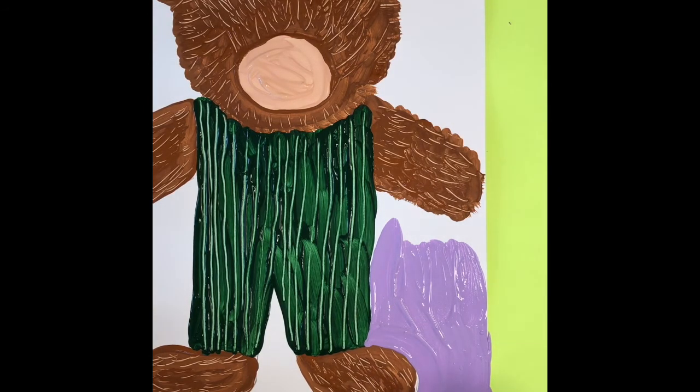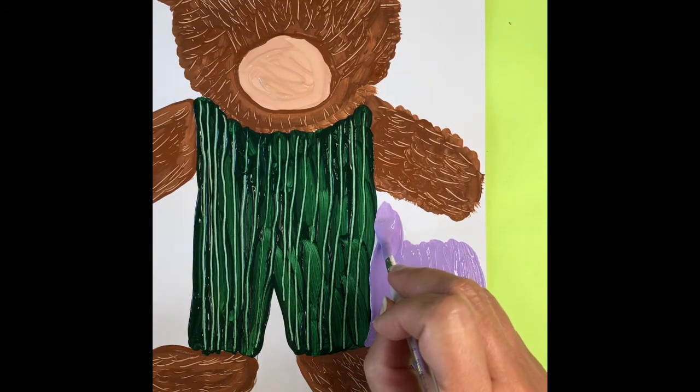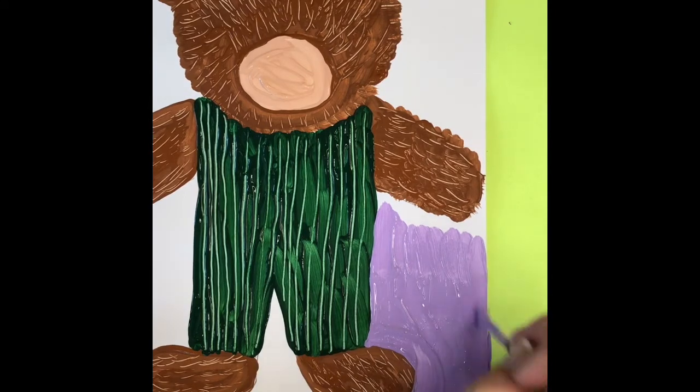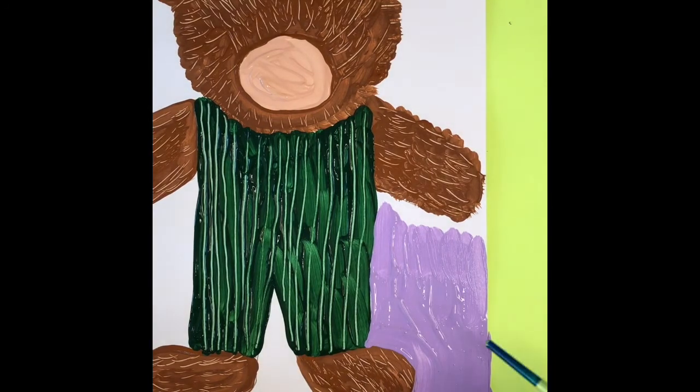And once I get a section painted in purple, it's time to have a little bit of fun. We're going to add in our own patterns. So for this one, there's not going to be really a texture, but we're going to draw pictures. So I'm flipping my paintbrush upside down again, and I'm doing the same thing with sgraffito where I'm scratching into the paint.